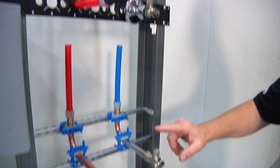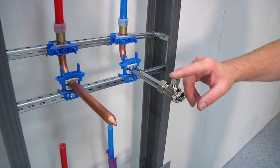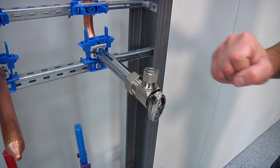For the stub valve connections, we're using a compression stop valve. This is also a corner turn stop.